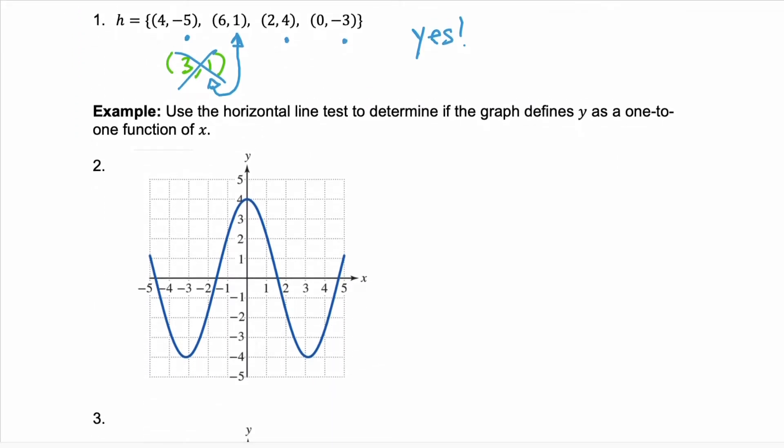Let's look at the next example. Here, we're given a graph, and we're going to use the horizontal line test to determine if this graph defines a function that's one-to-one. We're just going to draw a horizontal line anywhere through the graph and see what happens.